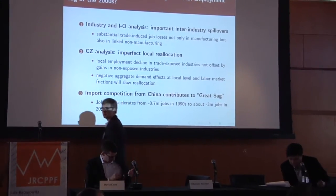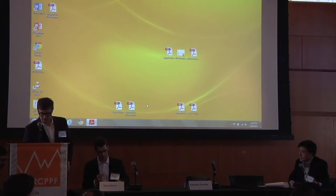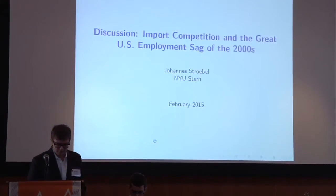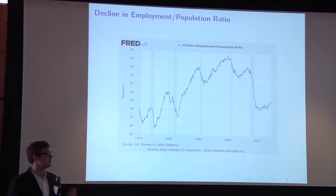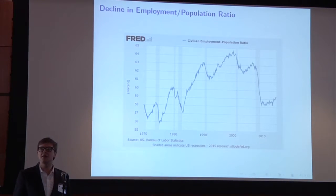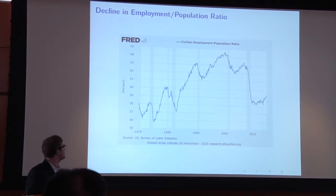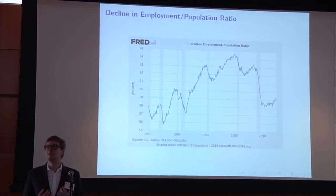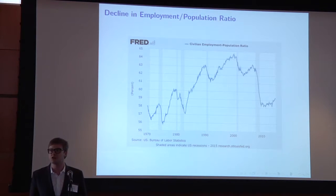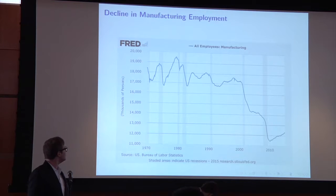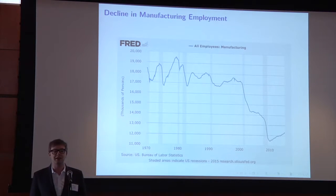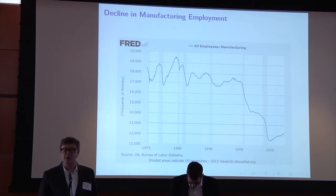The discussant is Johannes Strupo from New York University. The starting point for this paper is the observation that the decline, or turnaround, in the US labor market from going up for many decades to going down actually turned much before the Great Recession. Since about the early 2000s we've seen this decline in the civilian employment-to-population ratio, and simultaneously a significant decline in manufacturing employment. Total manufacturing employment was somewhere between 17 and 18 million employees from the 1970s to the early 2000s, and declined dramatically since then.